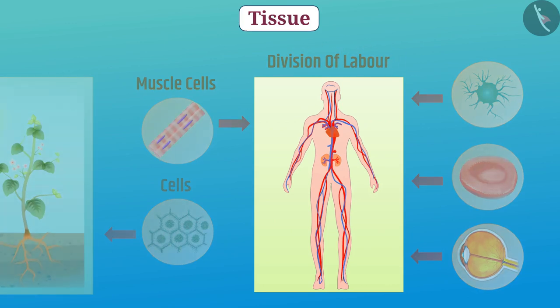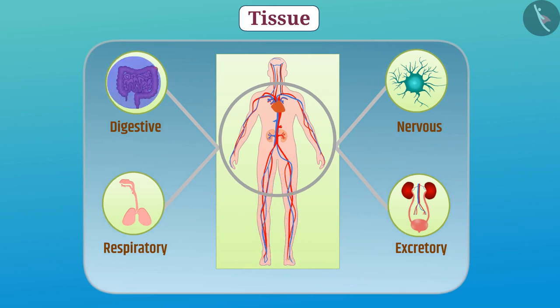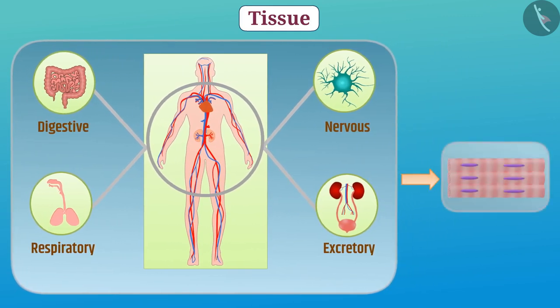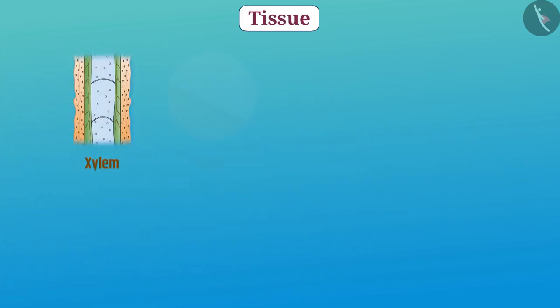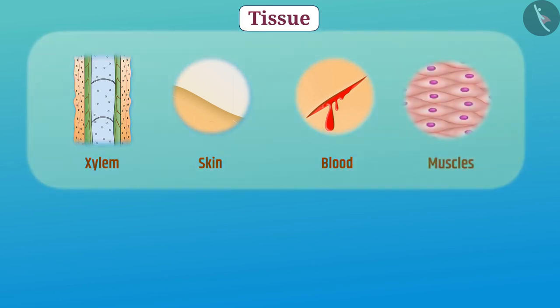Therefore, different organs of the body perform different functions. In the body, a specific function is performed by a specific group of cells at a definite place. This group of cells is called a tissue. For example, xylem, skin, blood, and muscles are tissues.